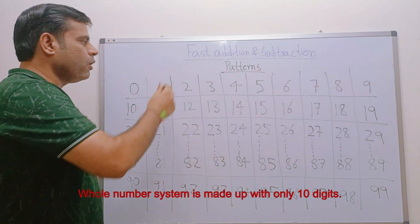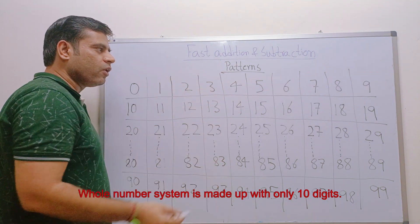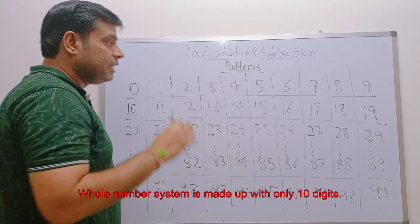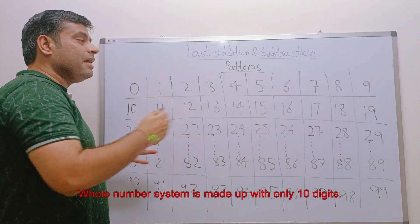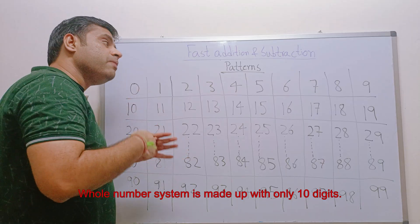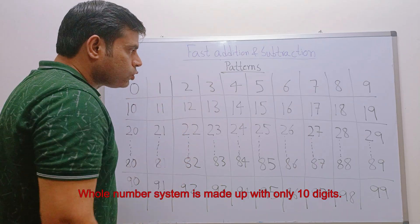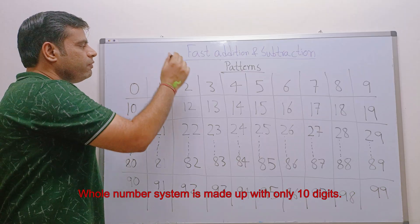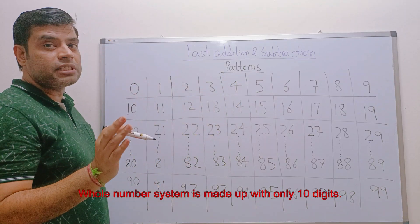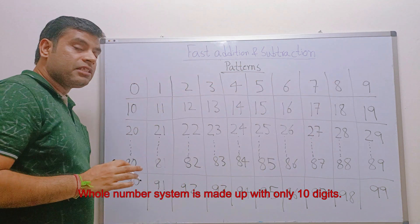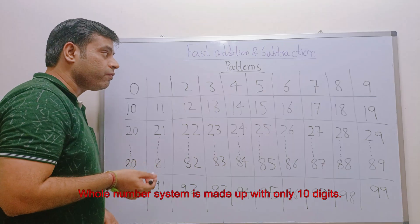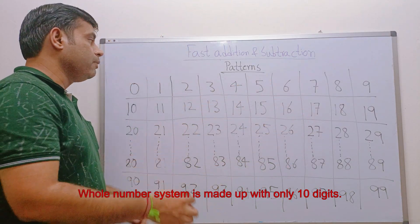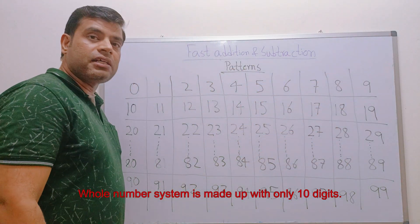There are only zero to nine digits, and the whole number system — whether international or Indian — is made up of these ten digits, rearranged with two, three, four or more digits. Now, is skip counting the only pattern? From zero, skip counting by two gives: 0, 2, 4, 6, 8, 10 — even numbers. From an odd number, it gives 1, 3, 5, 7 — odd numbers. You can make patterns like 0, 5, 10, 15 or the table of three: 3, 6, 9, 12, etc. But is it enough?